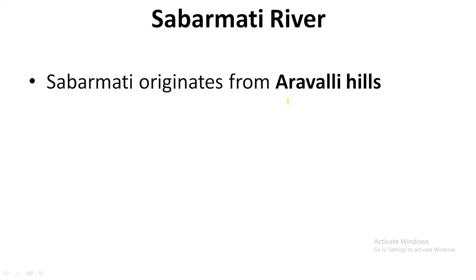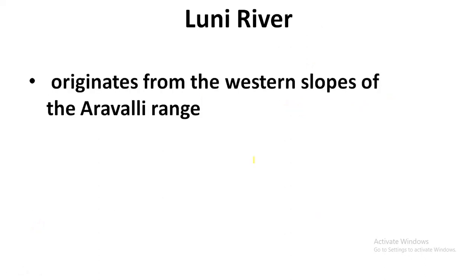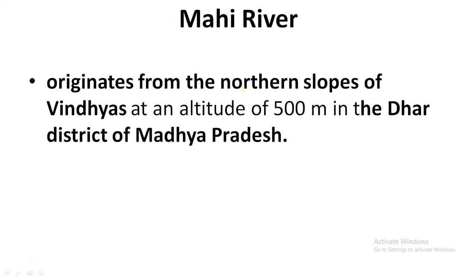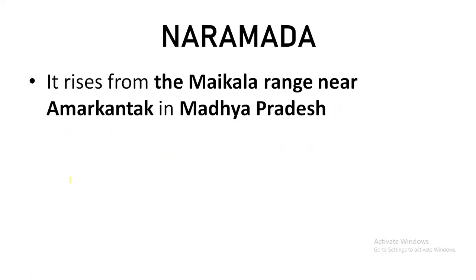Next, Mahi river. It originates from the northern slopes of the Vindhyas, which are in Madhya Pradesh — so Mahi originates from the Vindhyas in Madhya Pradesh. Narmada river is very, very important. It rises from the Maikala range near Amarkantak Plateau in Madhya Pradesh.